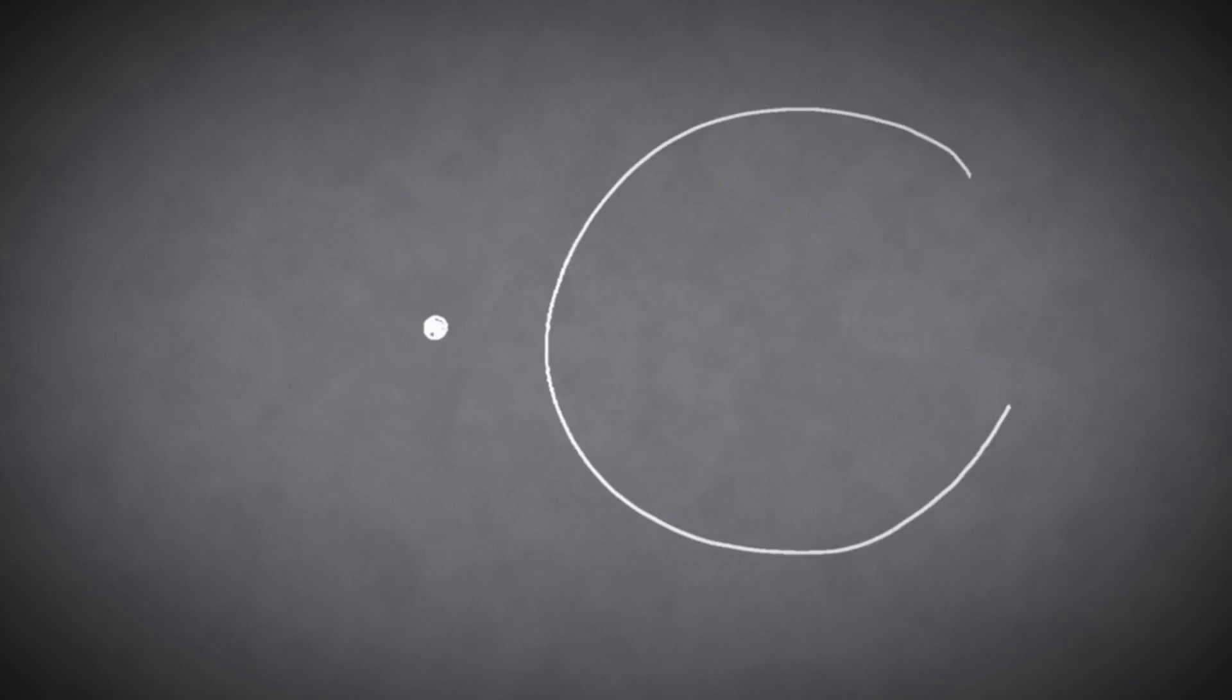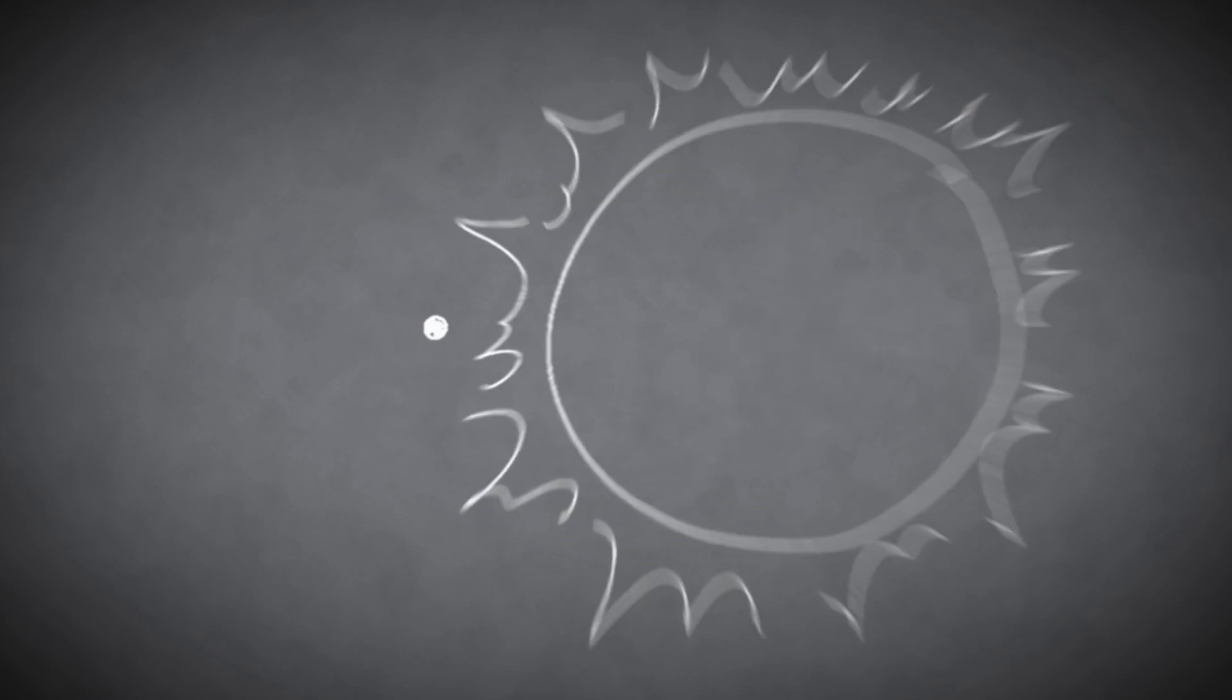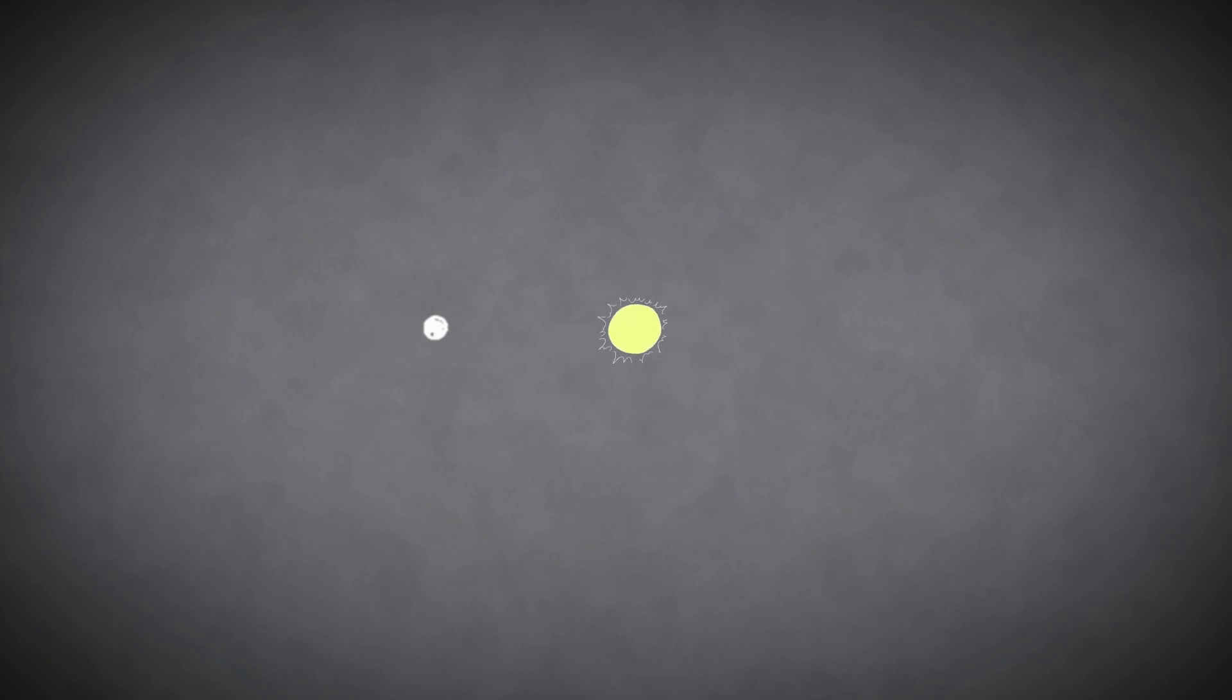How can the tiny moon do this when the sun is actually 400 times its diameter? Well, the sun happens to be 400 times farther away than the moon, so to observers on Earth, they both appear the same size in the sky.